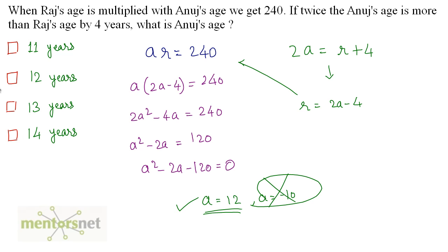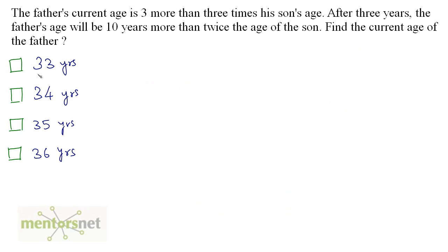So, Anuj's age is 12 years. The father's current age is 3 more than 3 times his son's age. After 3 years, the father's age will be 10 years more than twice the age of the son. Find the current age of the father.